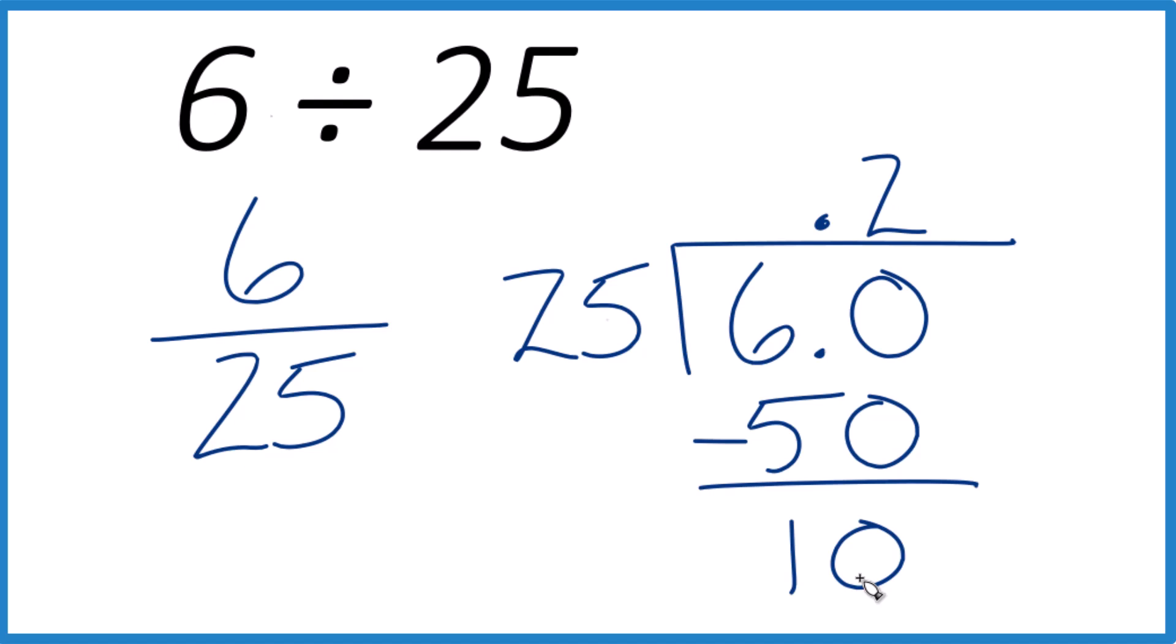25 doesn't go into 10, but if we move over 1, we can call this 6.00, still 6, then bring that 0 down. We end up with 25.